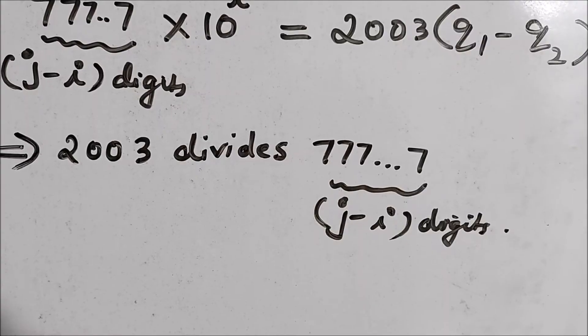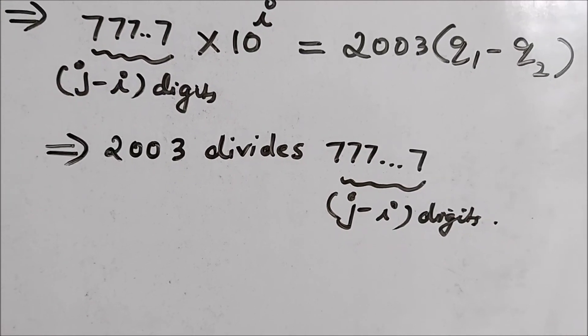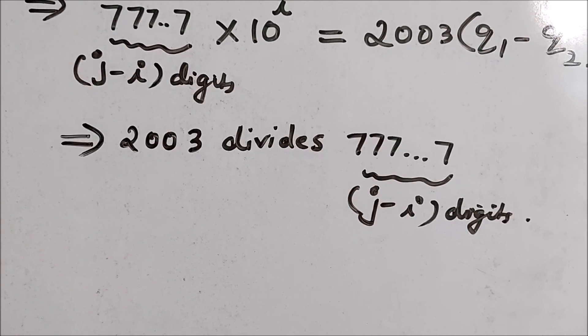It also means that 2003 divides one of the numbers in the sequence. So our assumption was wrong.